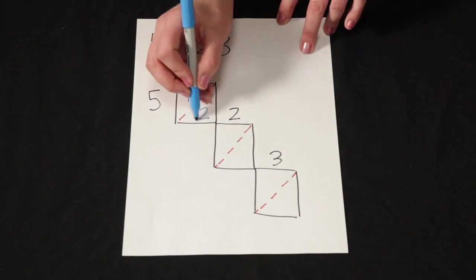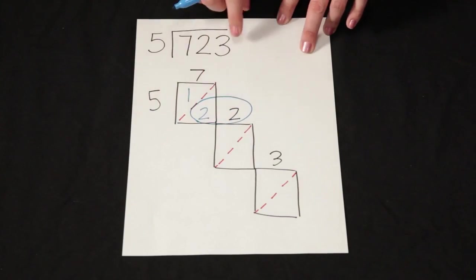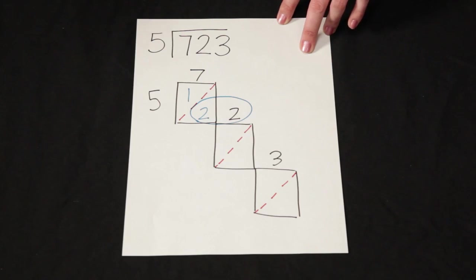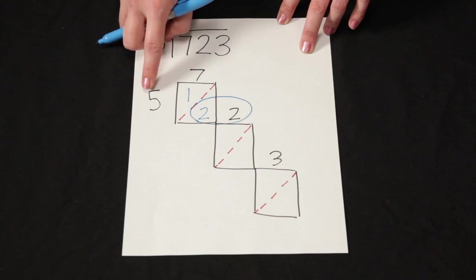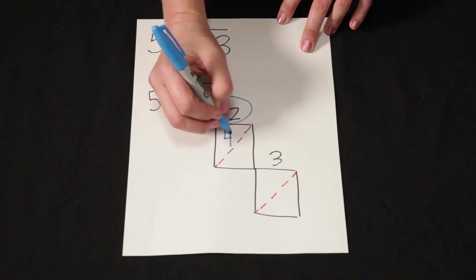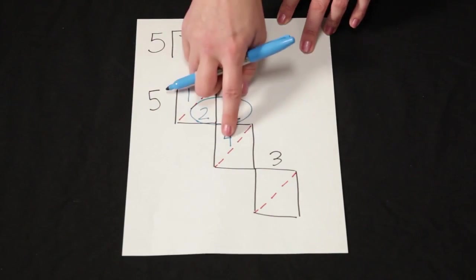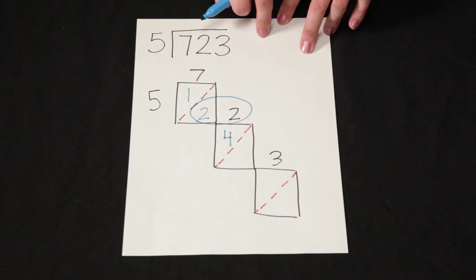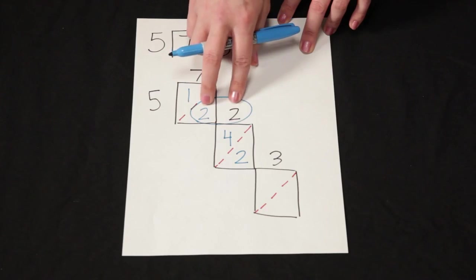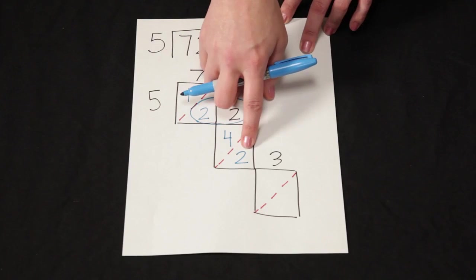Now I'm going to circle this set of numbers here. This is not just 2 and 2 anymore, but it's actually representing 22. So how many times does 5 go into 22? I can make 4 groups of 5. 5 times 4 is 20. And then I would have 2 remaining because 22 minus 20 is 2.